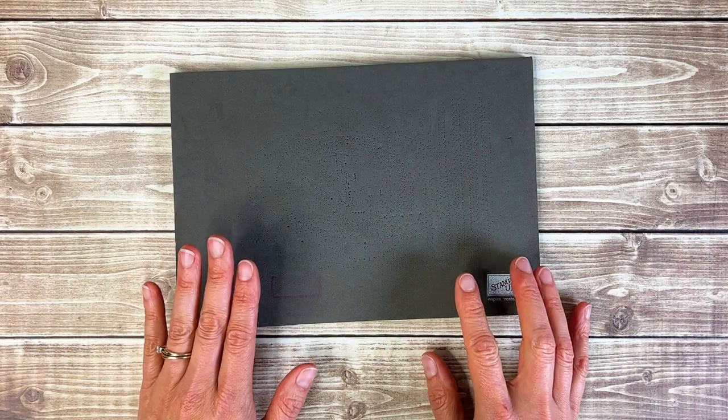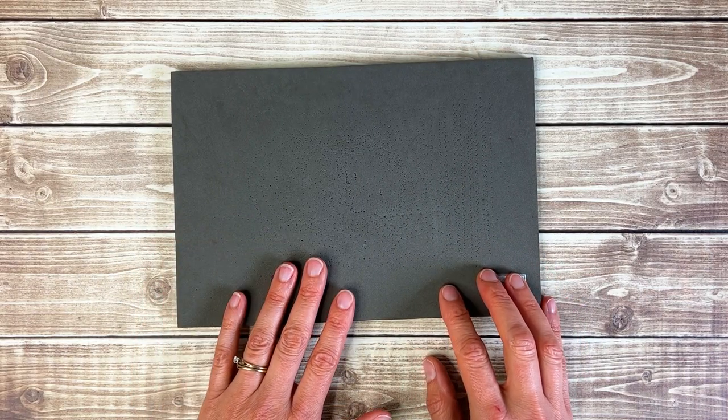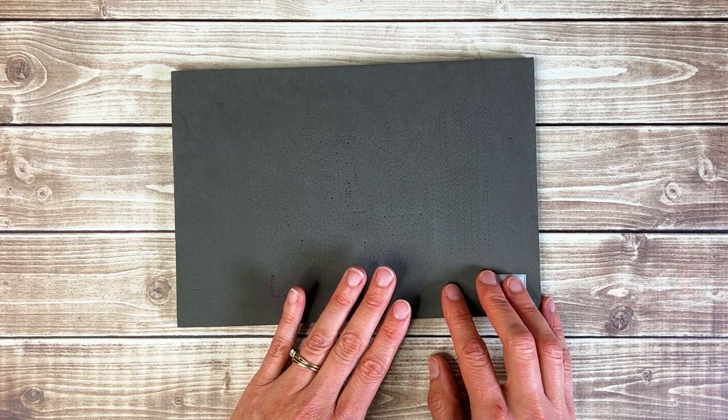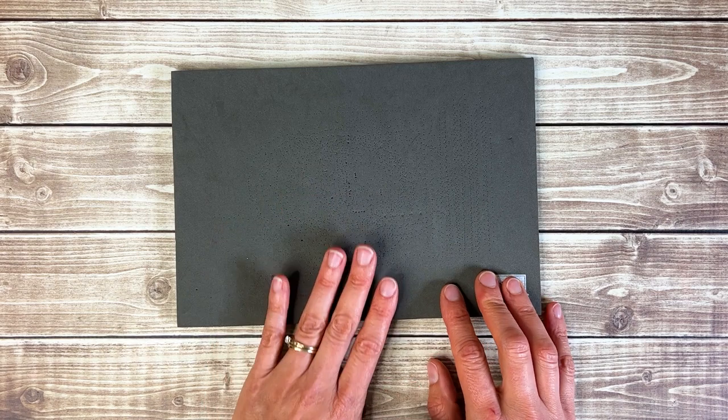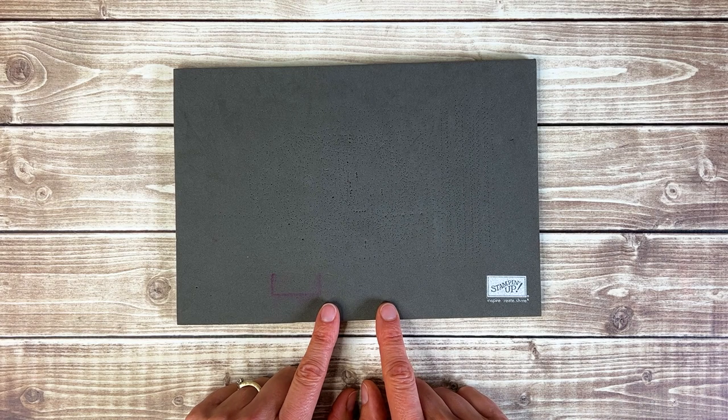The other nice thing about the Stampin Pierce mat is that if you're having a hard time getting a good stamped image, sometimes if you put this underneath your cardstock that you're stamping on you get more even pressure and ink coverage so you can get a better stamped image if you have this underneath your cardstock.